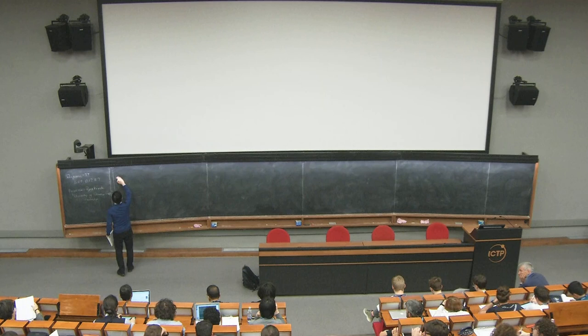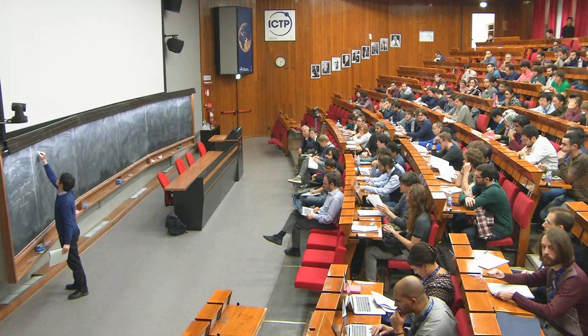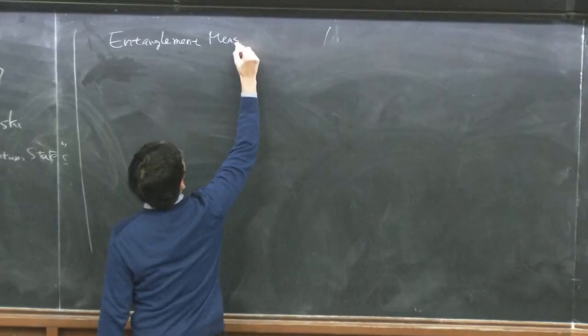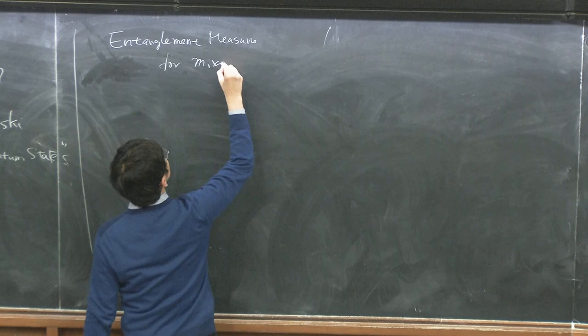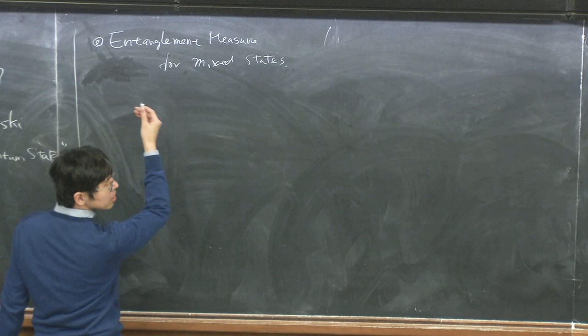We have one more thing to do — a continuation of my previous lecture. This is about the entanglement measure for mixed states. I explained that for pure states we can use von Neumann entropy, but for mixed states the situation is very complicated. Nevertheless, we have some definitions of entanglement measure for mixed states.